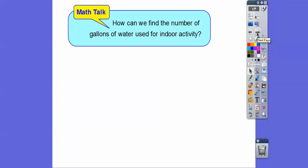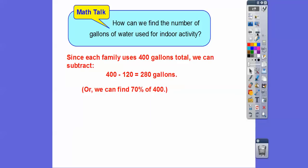So that's how much they use for their outdoor activity. How can we find the number of gallons of water used for the indoor activity? Since they have 400 gallons and used 120 gallons outside, the rest would be inside. We can subtract 120 from 400 and find out they use 280 gallons inside. Or since 30% was outside, then 70% would be inside because we take that off the 100%. You can find 70% of 400. Either way, both easy.